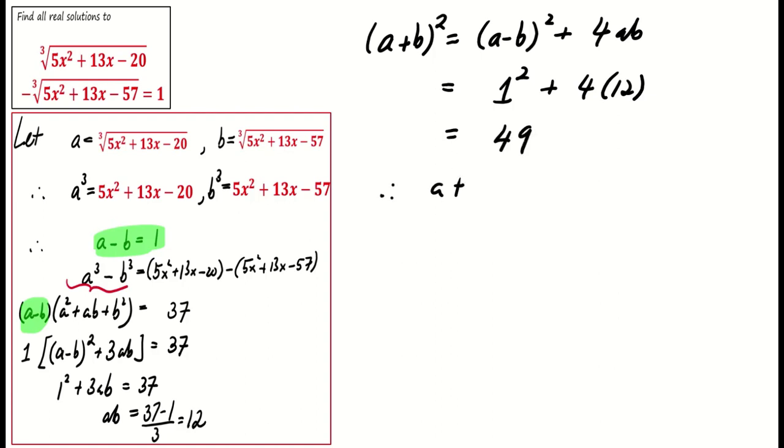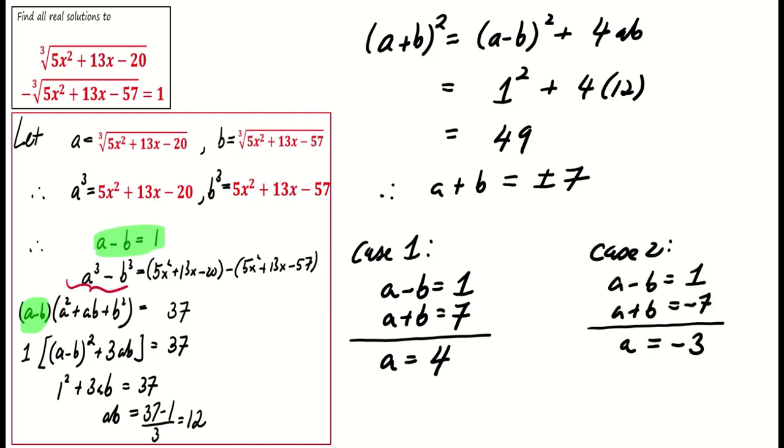This implies that a + b is either 7 or -7. Combining this with the condition a - b = 1, we get two solutions: a = 4 or a = -3.